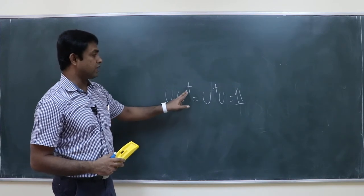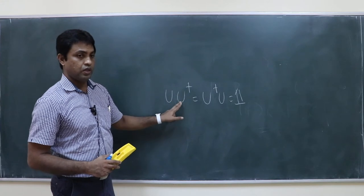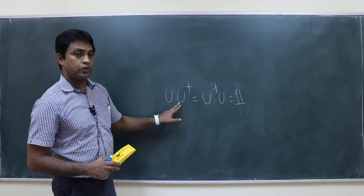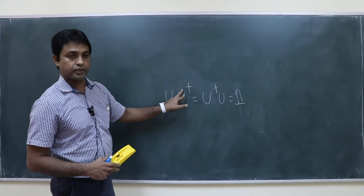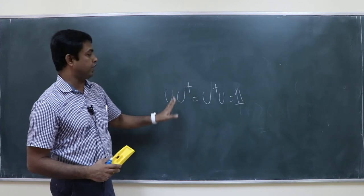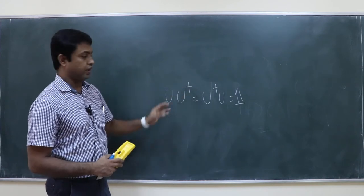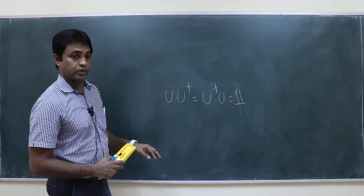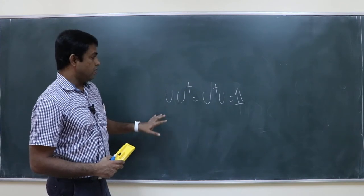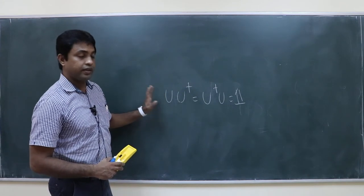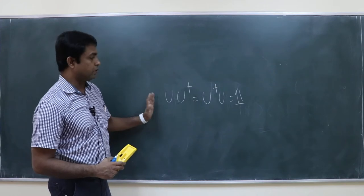In the case of a matrix, the dagger operation is the complex conjugate transpose. But in the case of an operator, you have to find the conjugate of the operator — that I will discuss later. This is the definition of a unitary matrix; let us talk in terms of matrices.